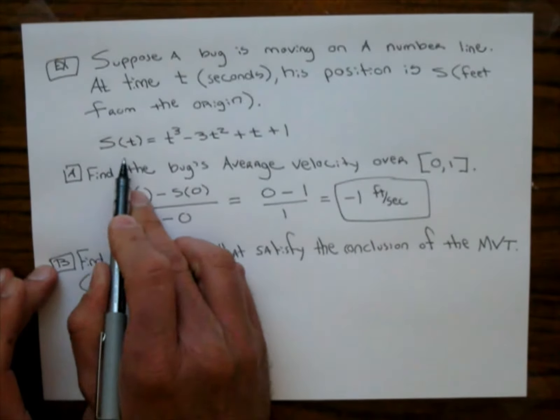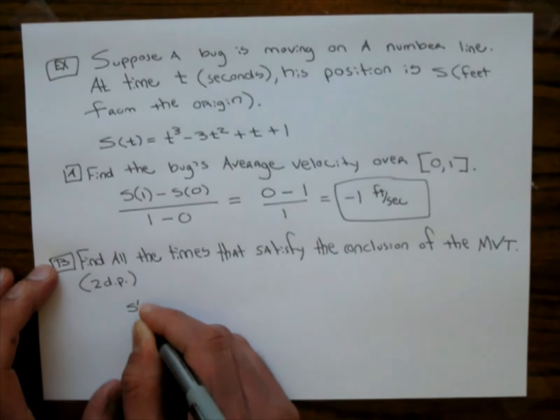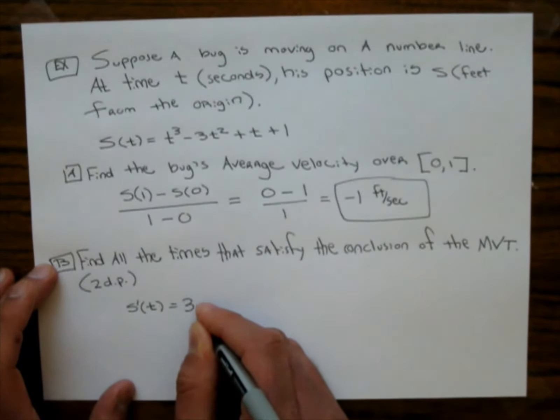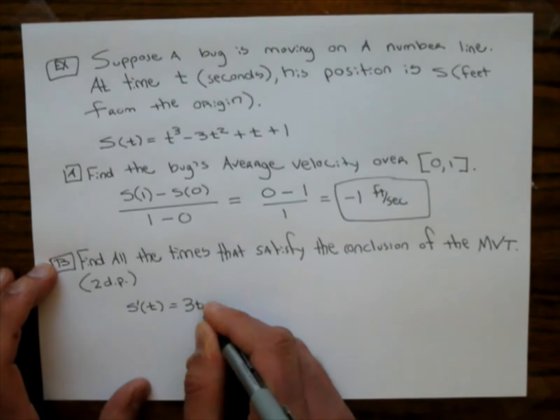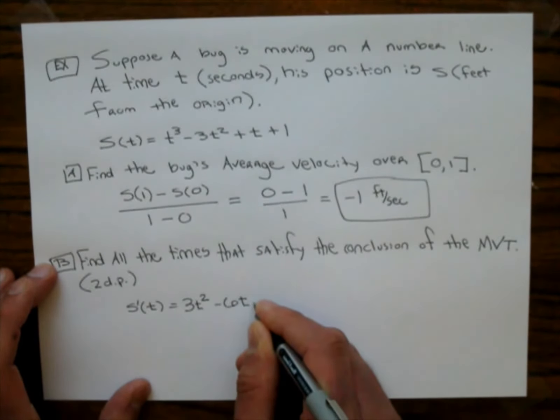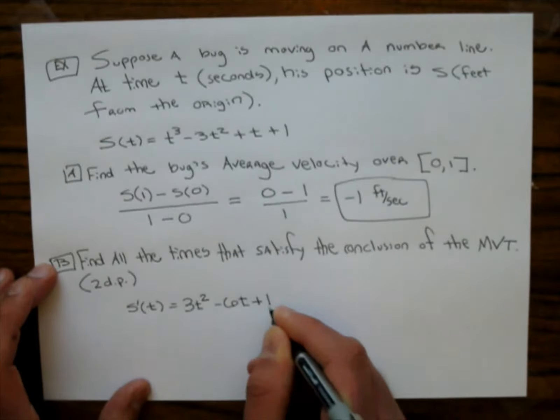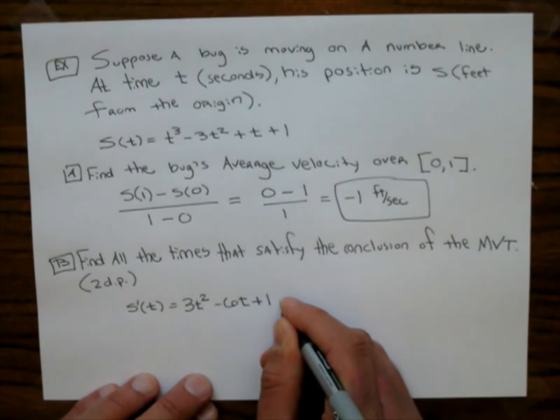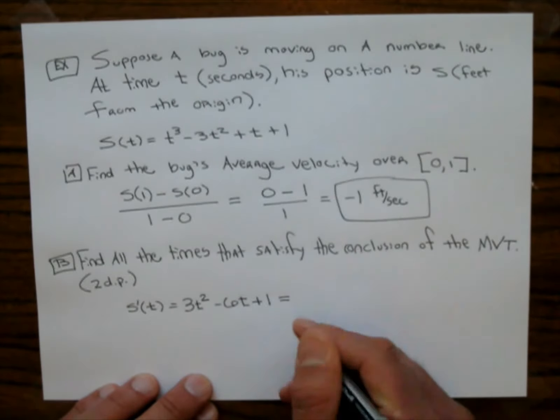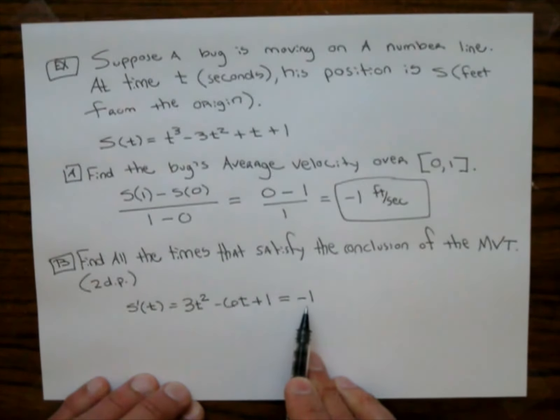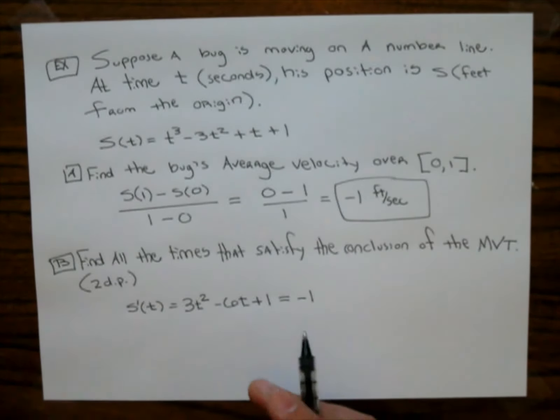So the derivative here, s prime of t, is, and we could have called it v(t), 3t squared minus 6t plus 1. And so what I'm going to do with this is I'm going to set this equal to negative 1. So I'm trying to find when the instantaneous velocity will be negative 1.